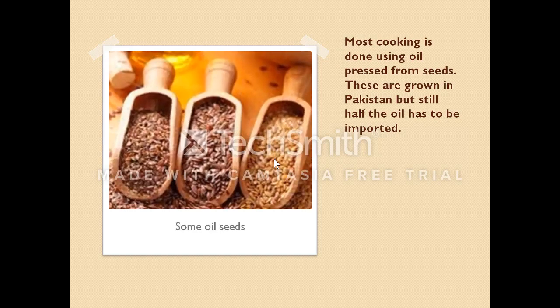Now we have oil seeds. Most cooking is done using oil pressed from seeds. These are grown in Pakistan — the seeds are pressed using a machine and the oil comes out. However, half the oil still has to be imported because there isn't enough produced locally. Here are some oil seeds.